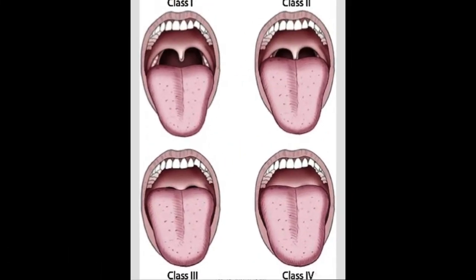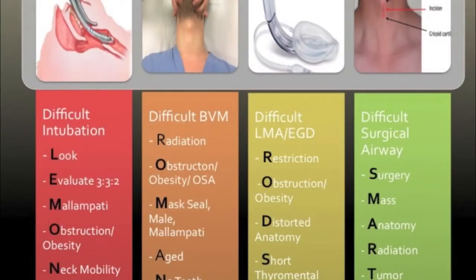M is for Mallampati — look in the mouth. If you're able to see the uvula, that is a good thing. If you can only see the hard palate, that is a bad thing. O is for obstruction. The most common upper airway obstruction in adults is the tongue, but the patient could also obstruct their airway with blood, emesis, or a foreign body. N is for neck mobility. Patients in a C-collar or who have rheumatoid arthritis will be particularly difficult.